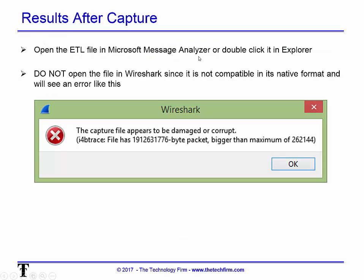After capturing, you end up with an ETL file that you can open in Microsoft Message Analyzer. Let me stop for a second and explain why we're doing this. With Microsoft Message Analyzer, I get additional information not available in other protocol analyzers — such as the process ID or process name that sent a packet on the wire, as well as internal system events. That's the real point: there's a whole lot of extra information in here useful for troubleshooting applications.